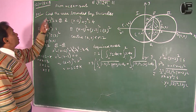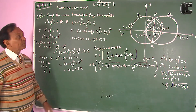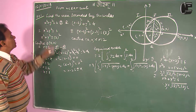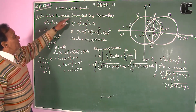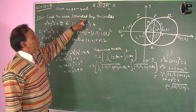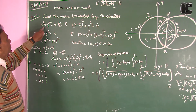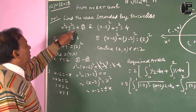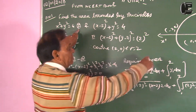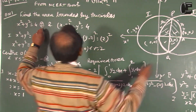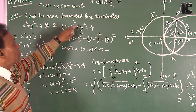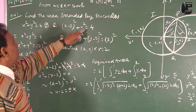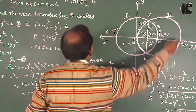We take question number one. This is also from the NCERT book. Find the area bounded by the circles: x squared plus y squared equal to 4 — that is the first circle — and x minus 2 whole square plus y squared equal to 4 — this is your second circle.